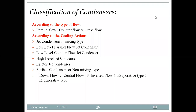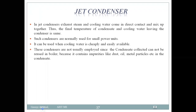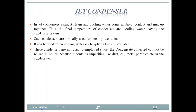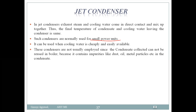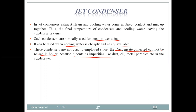We are continuing with the classification of condensers. The jet condenser is generally used in small power plants, and it can be used when cooling water is cheaply and easily available. However, these condensers are not usually employed in large plants since the condensate collected cannot be reused in the boiler because it contains impurities like dust, oil, and metal particles.